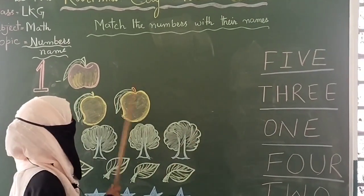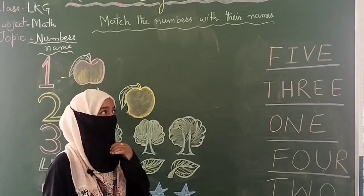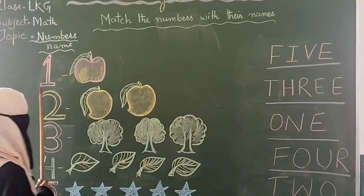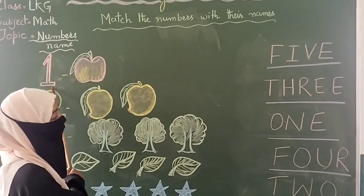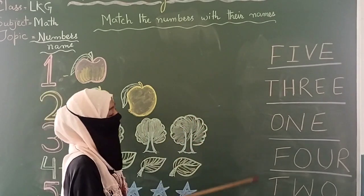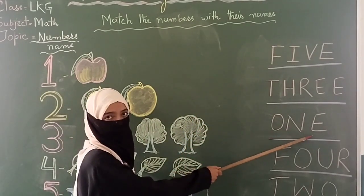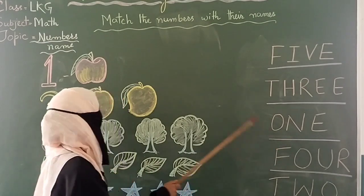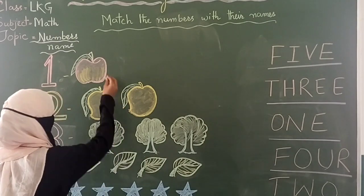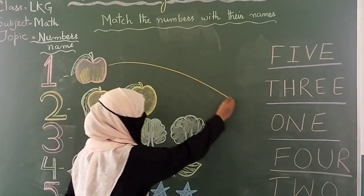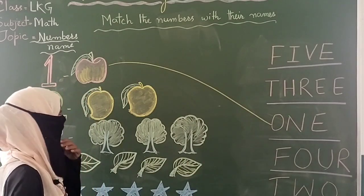We have to match each number with its correct name. Number one is one — what is the spelling of one? It's here: O-N-E, one. Now we will match this number with its name.